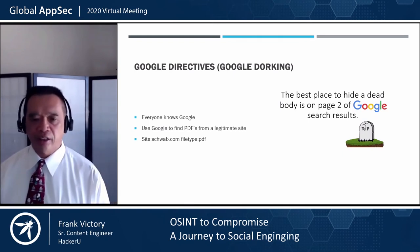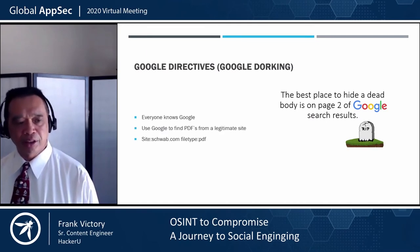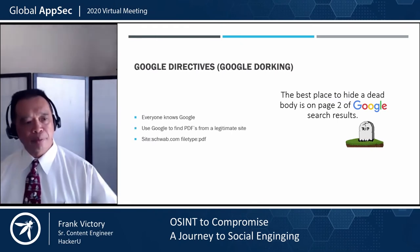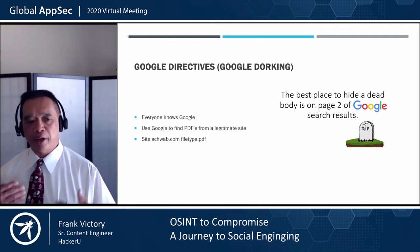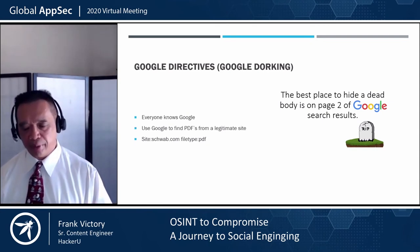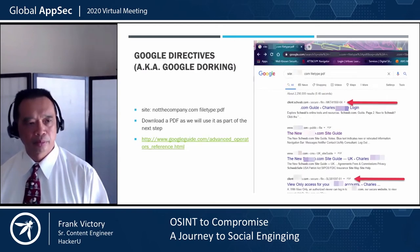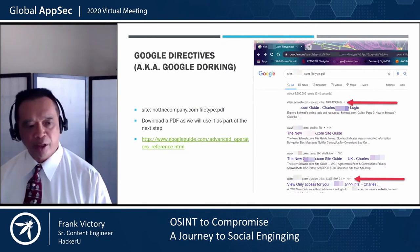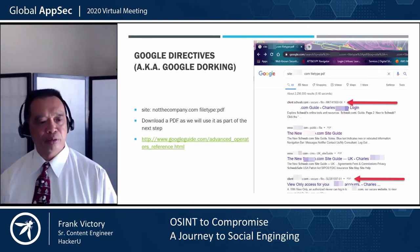We're going to use Google directives to find a PDF from a legitimate site. We know the original target was schwab.com, so we're going to type into Google: site:schwab.com and filetype:pdf. What this does is find all the PDFs hosted on schwab.com. We can then look at what kinds of files are coming from schwab.com and use those to make a better, more convincing phish. I downloaded the PDF to use as part of the next step. If you need more information on Google dorking, it's googleguide.com — advanced operators reference.